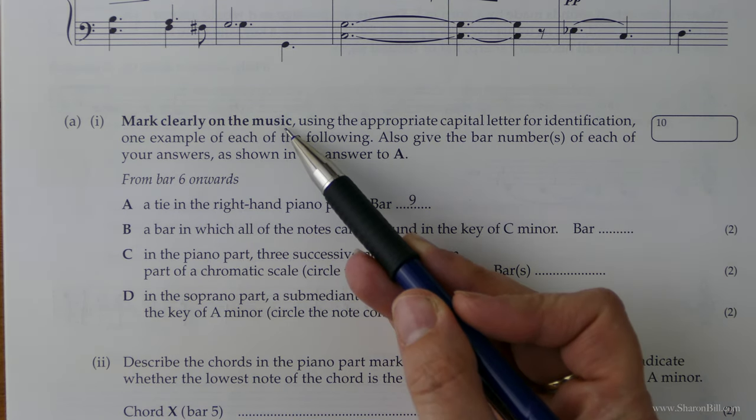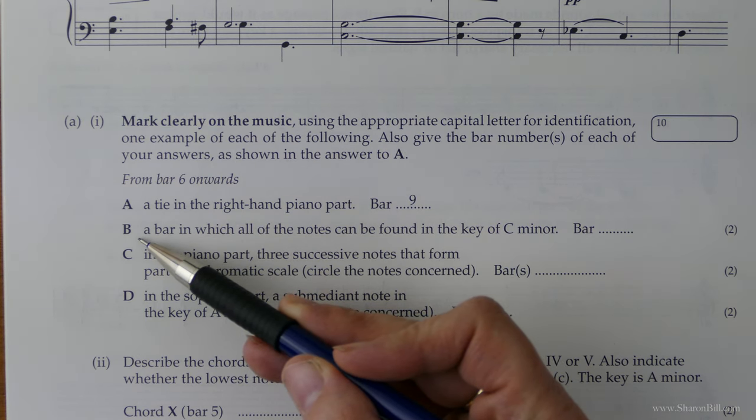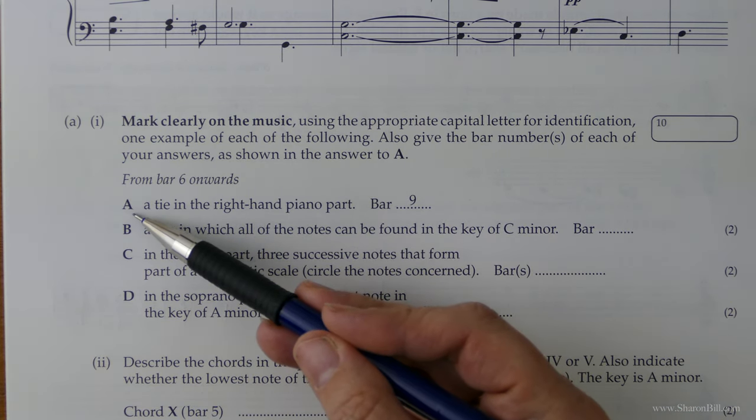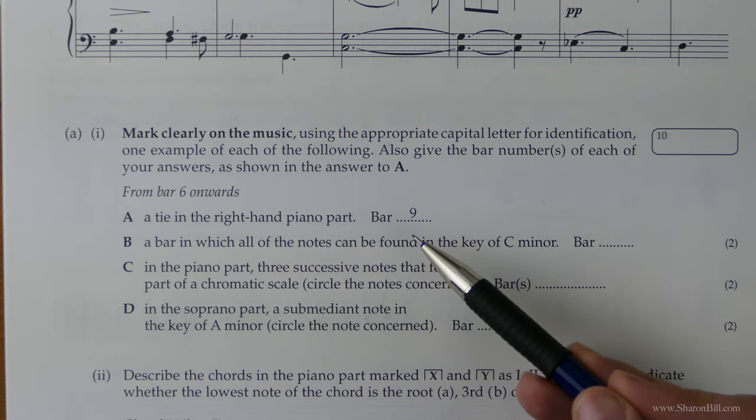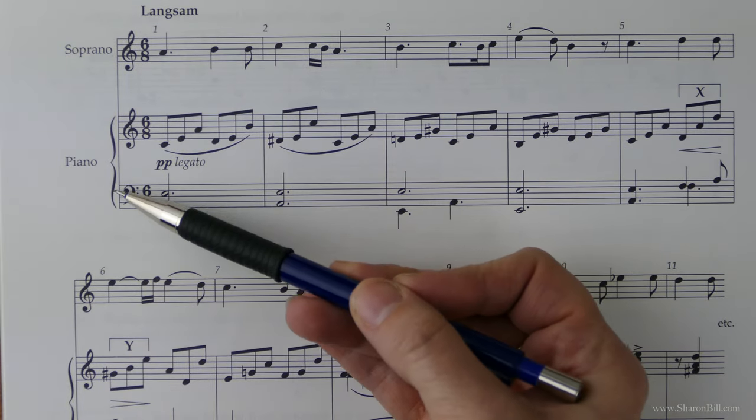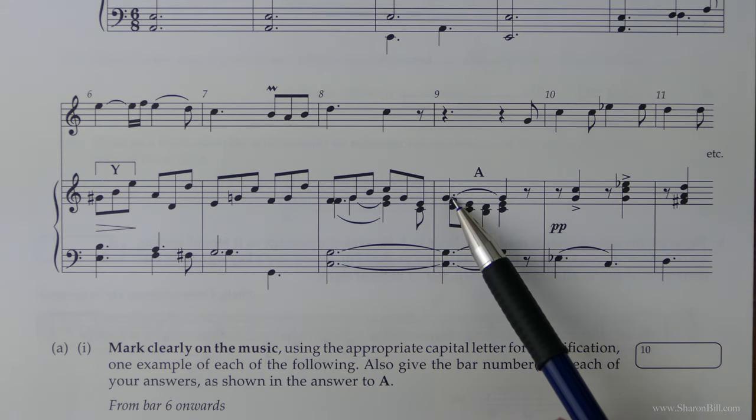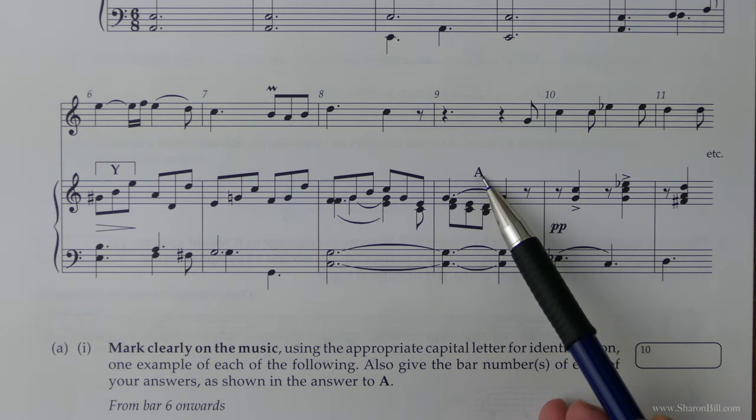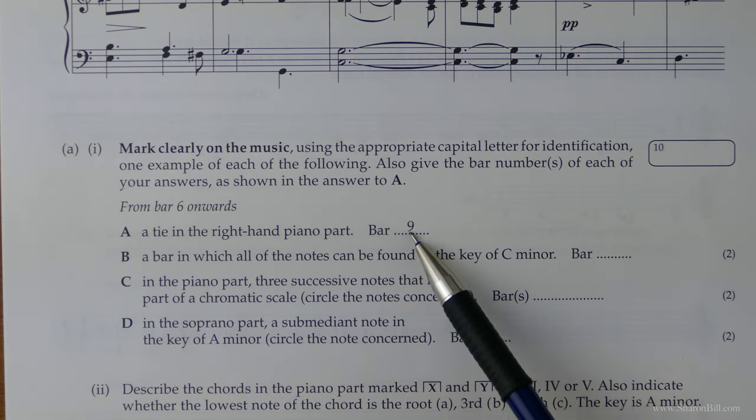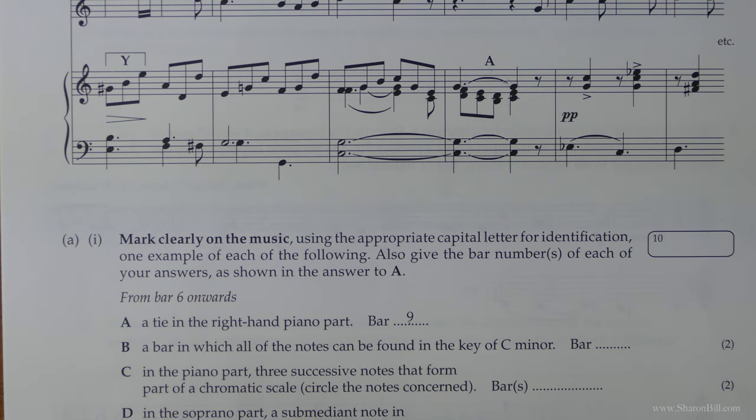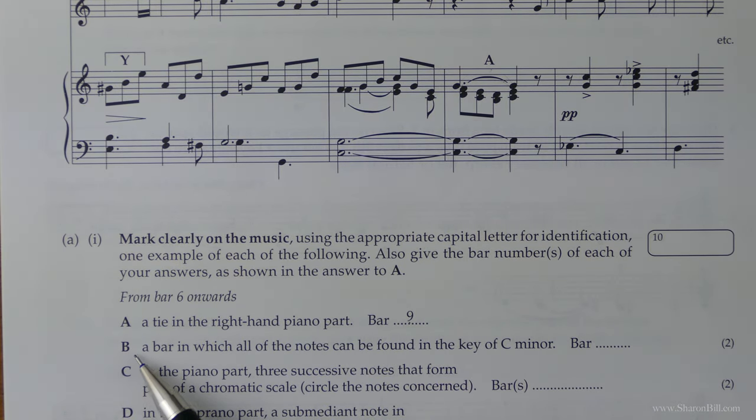So we're asked to mark clearly on the music the capital letter that refers to the question that we are answering, showing where we can find what they're asking us to look for here. So for example, question A asks us to find a tie in the right hand piano part. So we have the soprano voice part, we have the piano part, the right hand at the top, left hand at the bottom, and so a tie in the right hand part of the piano part can be found here. So we're to write a letter A, and then we show that the answer can be found in bar nine.